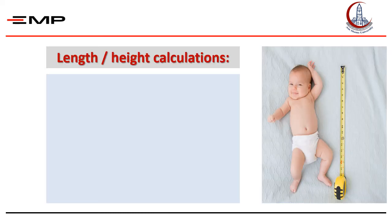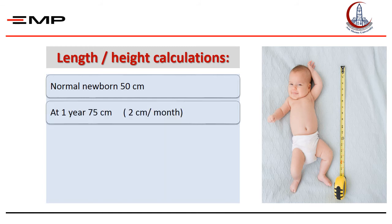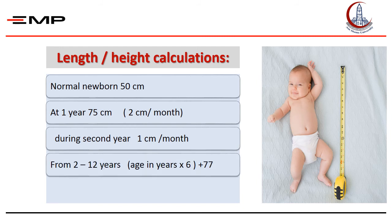Here are some facts about height or length. The mean length of a normal neonate is 50 centimeters. The length increases 2 centimeters per month during the first year, so the infant will be 75 centimeters by the end of the first year. Then 1 centimeter per month to the end of the second year. After the second year, you can use a formula for calculation of the height.